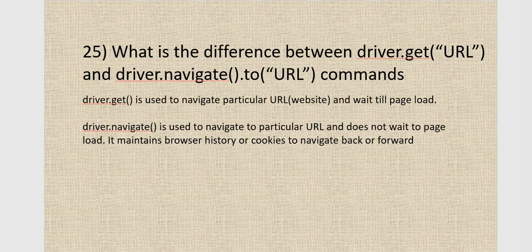What is the difference between driver.get() and driver.navigate().to() commands? Both are methods of the WebDriver interface. driver.get() is used to navigate to a particular URL and will wait until the page loads. driver.navigate() is used to navigate to a particular URL but does not wait for the page to load. One important point about driver.navigate() is that it maintains browser history and cookies, allowing navigation back or forward.